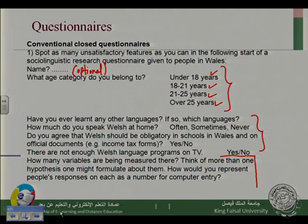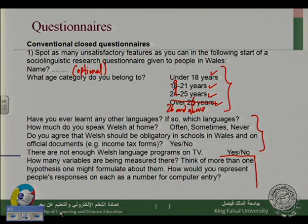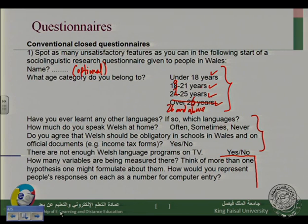One way to improve it is to have: under 18 years, from 19 to 21, from 22 to 25, and over 26. Just from the beginning, we discovered two problems. As I told you, it is not easy to design a good questionnaire. Now let's go to the third question: 'Have you ever learned any other languages? If so, which languages?' But what if your answer is no — 'I haven't learned any language'? You should have another option: 'If no, skip to question four.'